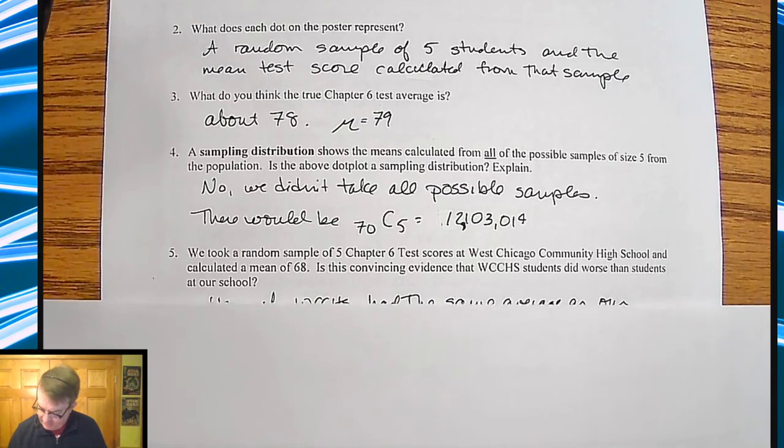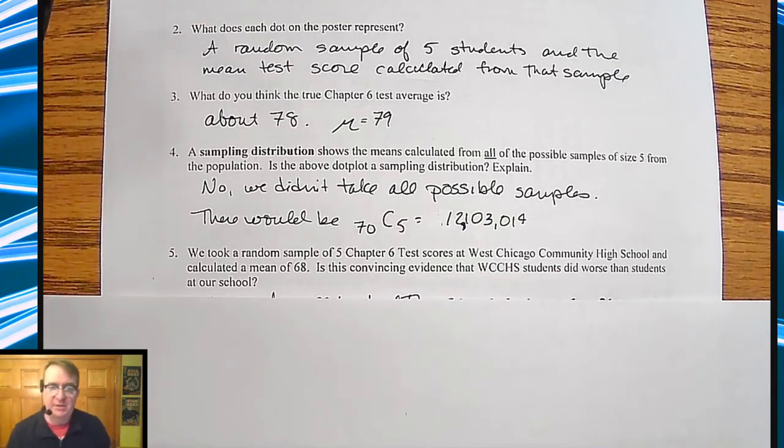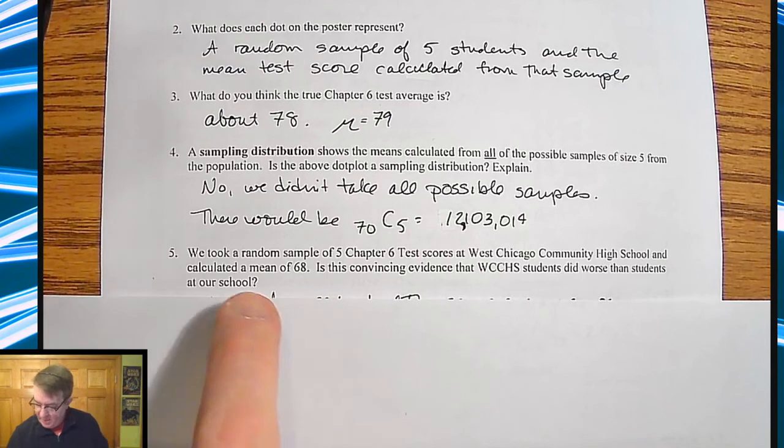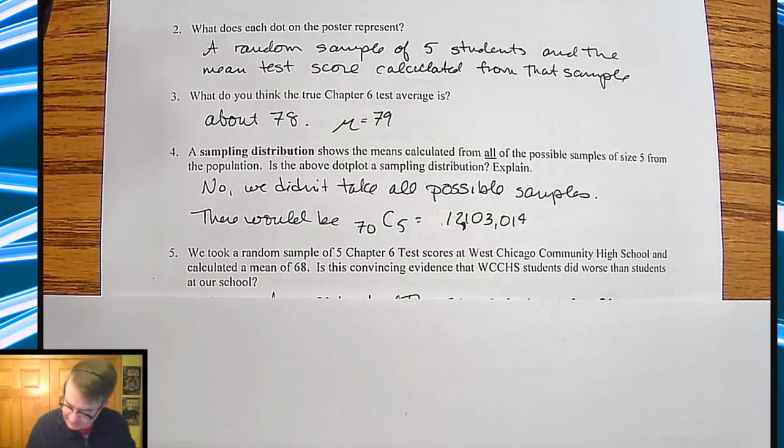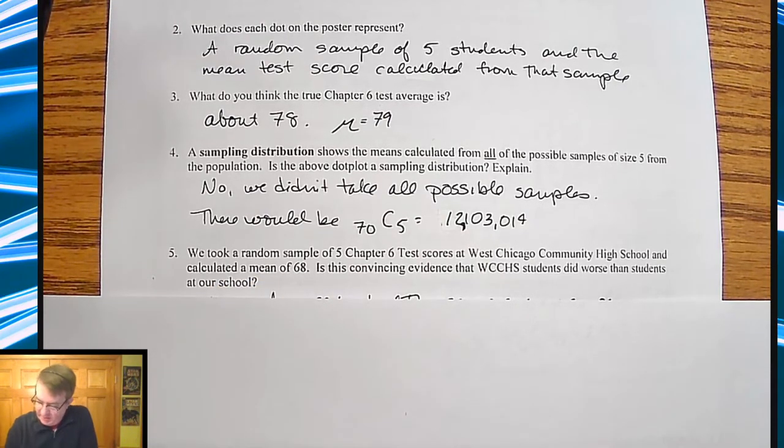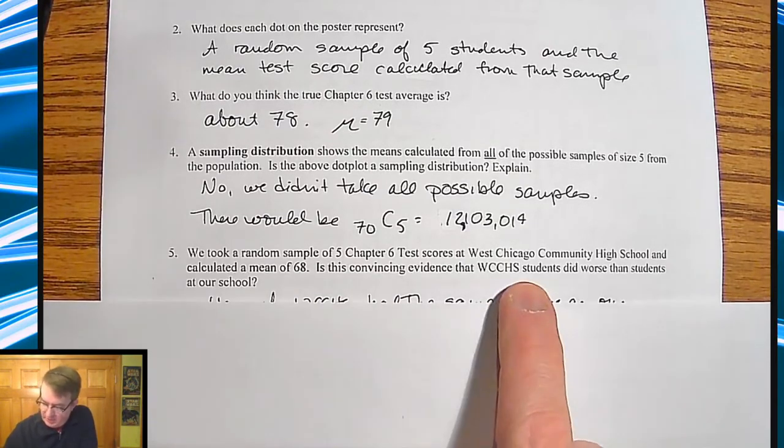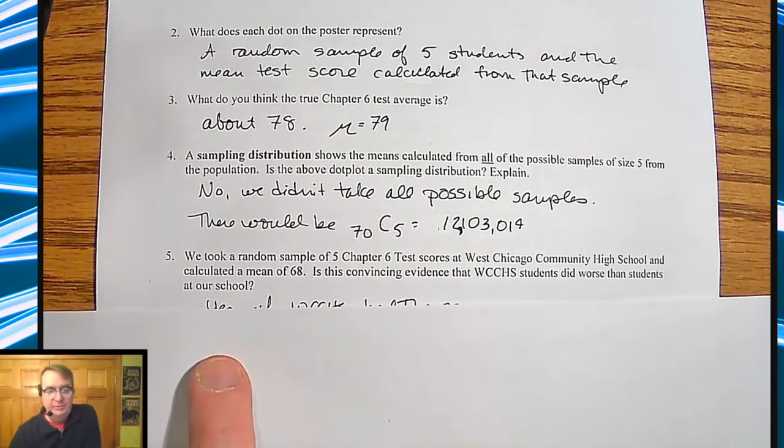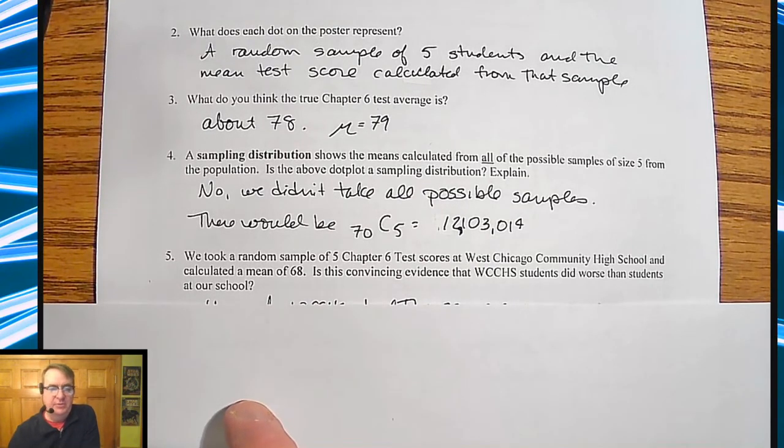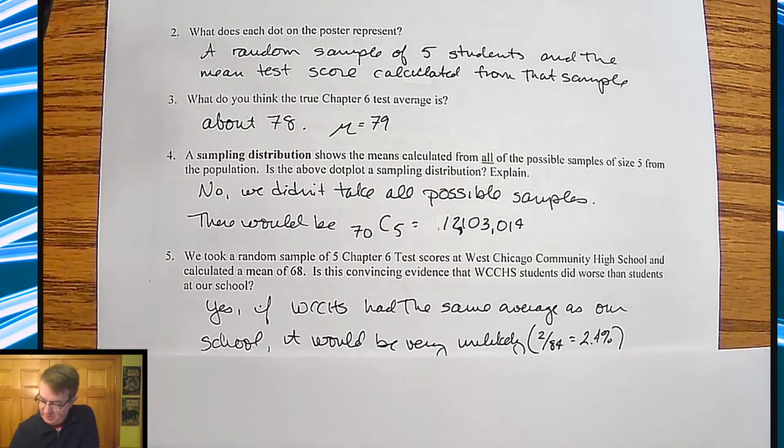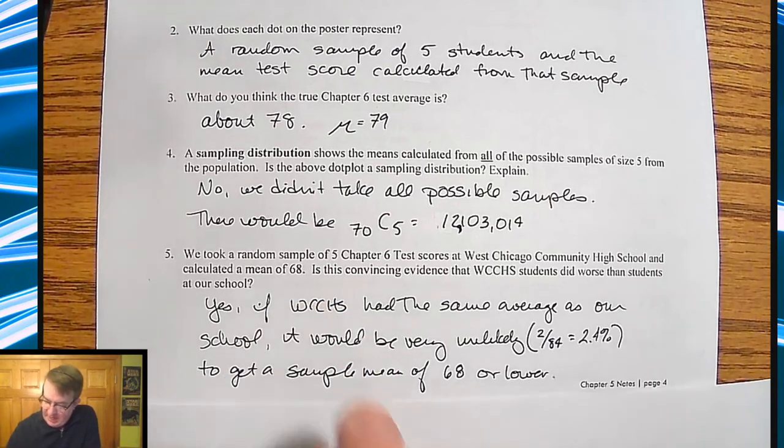So then down here, and I, too quickly, for those of you guys at West Chicago, where I teach, by the way, I went too fast on this. But for those of you guys who aren't in West Chicago, this will work out perfectly. We took a random sample of five Chapter 6 test scores at West Chicago Community High School and calculated a mean of 68. Is this convincing evidence that the West Chicago students did worse than our school? I know. That is our school for some of us. My deepest apologies.